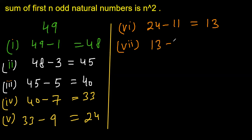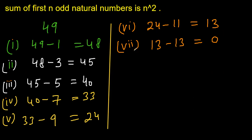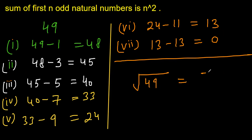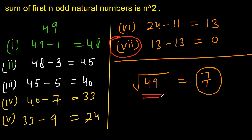In step 7: 13 minus 13 equals 0. We get 0, which means 49 is the sum of the first 7 odd natural numbers. Therefore, the square root of 49 is 7. We can see it took 7 steps — we subtracted 7 odd natural numbers — so the square root of 49 is 7.